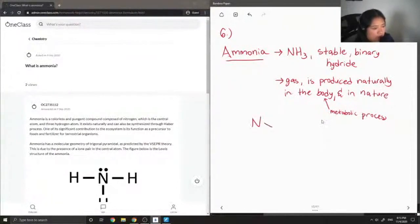We can also draw out its Lewis structure, just showing that there are three hydrogens, and you'll also notice that it has a lone pair.